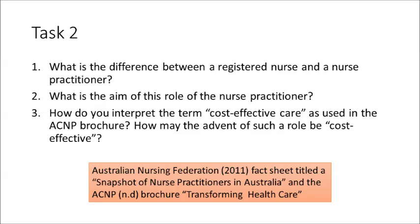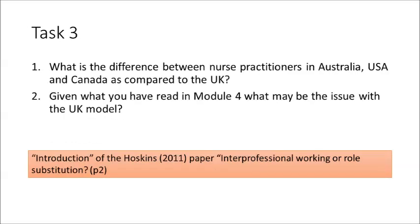Task 3 continues this theme of scope of practice. Read the introduction from the Hoskins paper and answer the following questions: What is the difference between nurse practitioners in Australia, the United States, and Canada as compared with the United Kingdom? And given what you've read in Module 4, what may be the issue with the UK model?